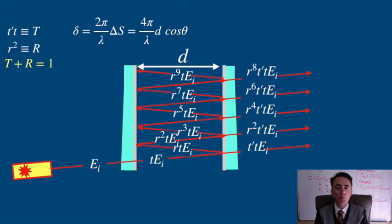If we write the incident beam of light in complex form E0 times e to the iωt, then the first beam going out of the interferometer will be E1 equal to E0 capital T e to the iωt.